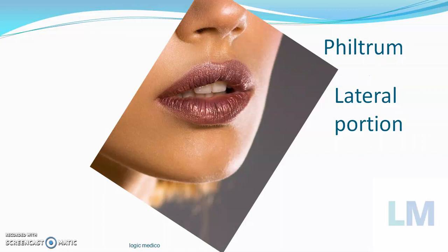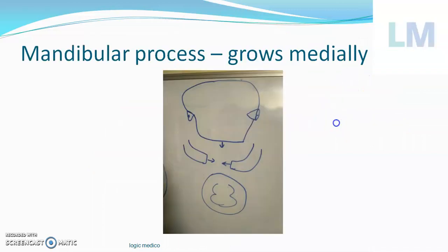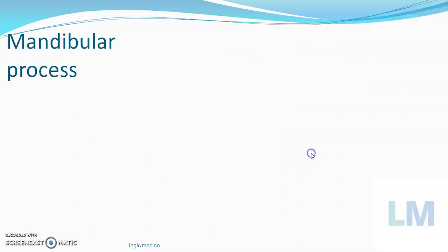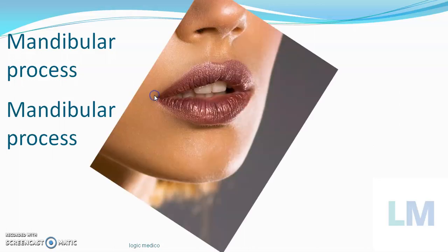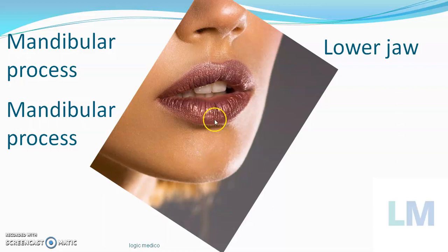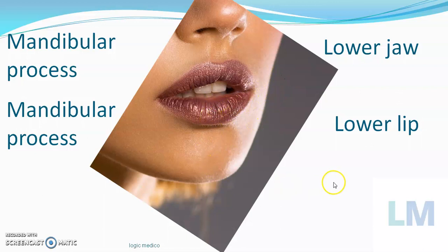The mandibular process grows medially, cutting the connection between the primitive mouth and the pericardial bulge. The mandibular process of the right side and that of the left side come together to form the lower jaw and also contribute to the lower lip. So the lower lip is formed by the mandibular process of one side reuniting with the mandibular process of the other side. Lower lip development is very straightforward.